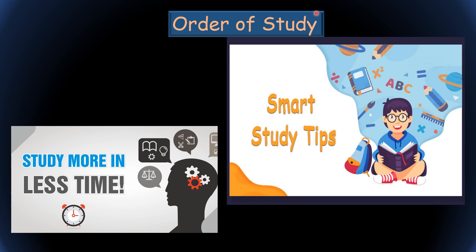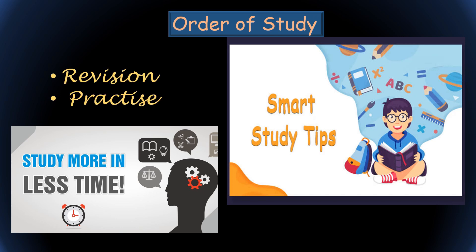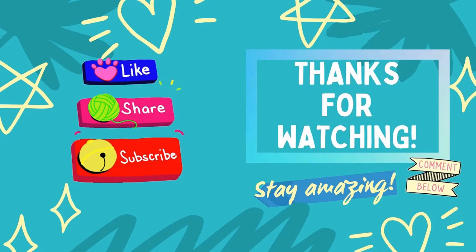Don't take biology casually — whoever does will not score well. Among the 720 total marks, biology contributes 360 marks and you have to score more than 300 in biology to clear NEET 2024. If you love biology, start your revision now; if you don't like it, you need to work even more intensively. Revision and practice are very important — best of luck for your NEET UG preparation. Thank you, stay tuned for our next video.